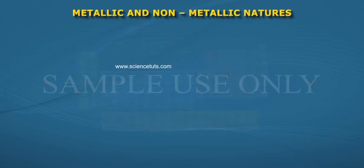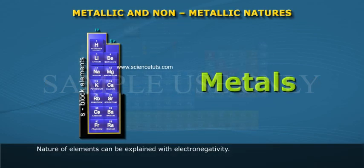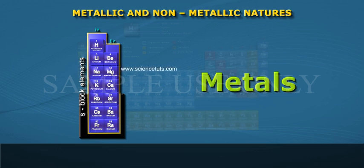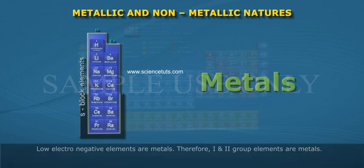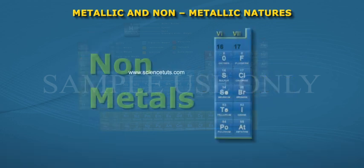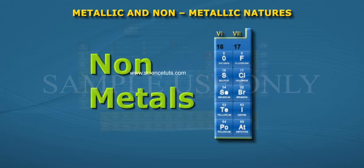Metallic and non-metallic natures: Nature of elements can be explained with electronegativity. Low electronegative elements are metals. Therefore, first and second group elements are metals. High electronegative elements are non-metals. Therefore, sixth and seventh group elements are non-metals.